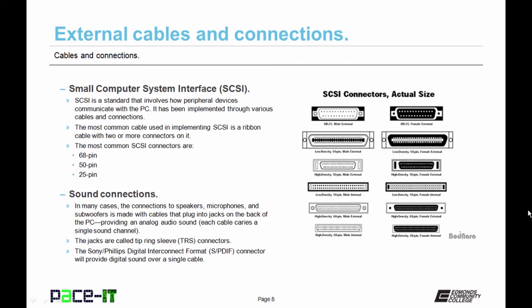Now let's move on to the small computer system interface, the SCSI interface. SCSI is a standard that involves how peripheral devices communicate with the PC. It's been around for a while, so it's been implemented through various cables and connection. The most common cable used in implementing SCSI is a ribbon cable that has two or more connections on it. The most common SCSI connectors are the 68 pin, the 50 pin, and the 25 pin connection. You need to know what your device and interface is when you are installing SCSI.